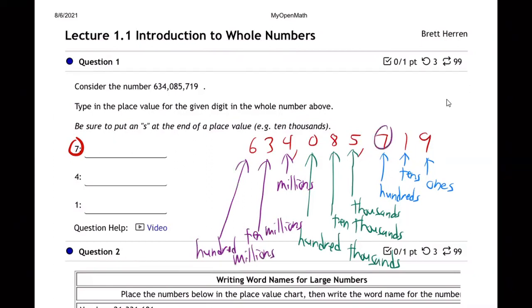Okay, so where's my seven? My seven is in the hundreds place. And the four is in the millions place. So I'm just doing mine. Yours is going to be different. The one is in the tens place. And so we just type those in. And there we go.